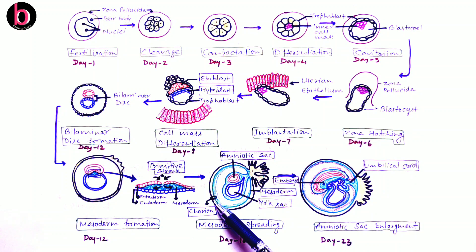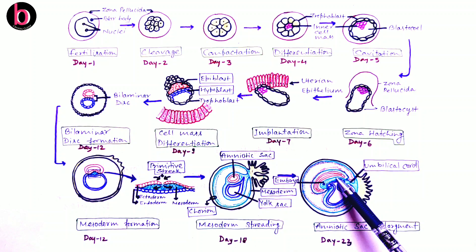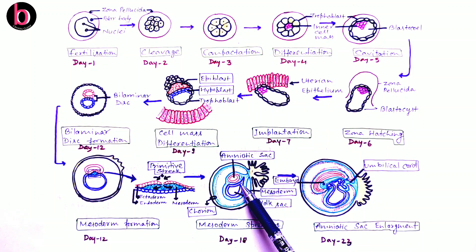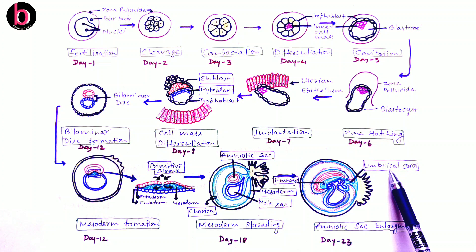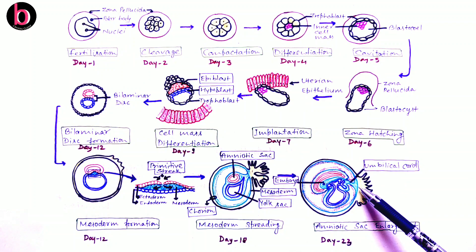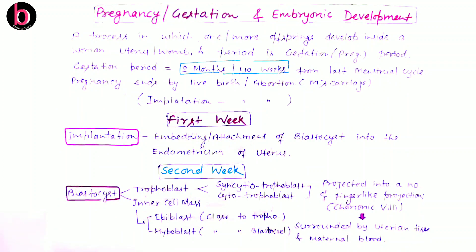Later on, the mesoderm fuses with the trophoblast to form the chorion layer. Between these regions there is further development of the embryo, and a part of the yolk sac along with mesoderm is converted into the umbilical cord. The umbilical cord is a link between the mother's body and the developing embryo or fetus.